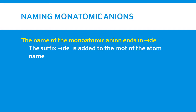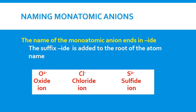When naming monatomic anions, the suffix '-ide' is added to the root of the element name. For example, oxide comes from oxygen — remove '-ygen' and add '-ide.' Chloride comes from chlorine — remove '-ine' and add '-ide.' Sulfide comes from sulfur — remove '-ur' and add '-ide,' giving us the sulfide ion.